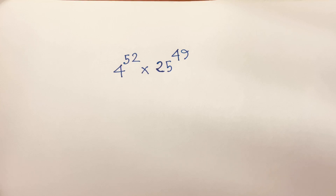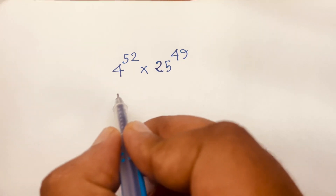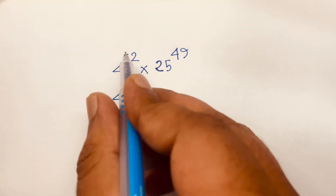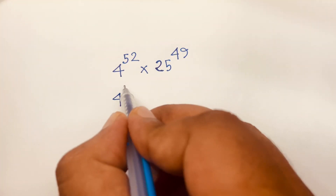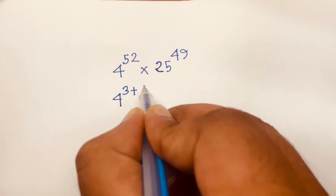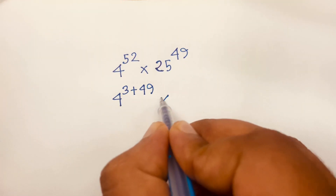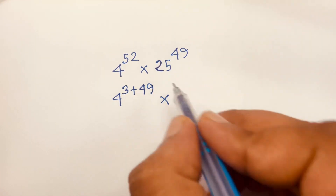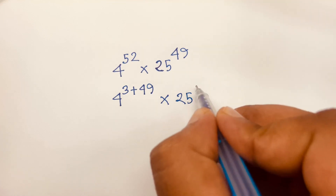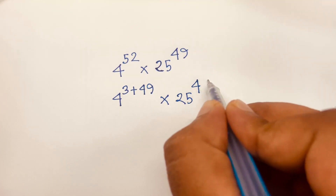How to solve this Math Olympiad question without a calculator. First, I can rewrite 4 to the power 52 as 4 to the power of 3 plus 49, where the remaining power is 49.